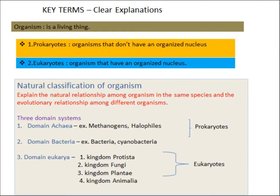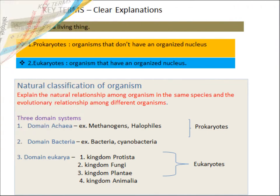Our third domain is domain Eukaryote. There are four kingdoms that belong to this domain. Let's see them one by one: kingdom Protista, kingdom Fungi, kingdom Plantae, and kingdom Animalia.